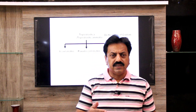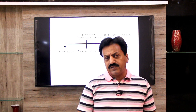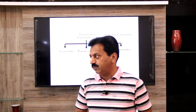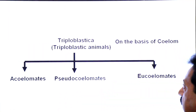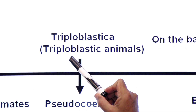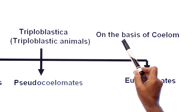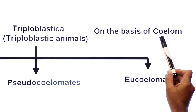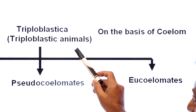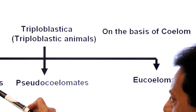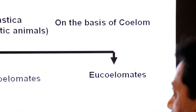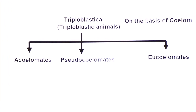Today we will start the Classification of Triploblastic Animals on the Basis of Coelom. On the basis of coelom body cavity, Triploblastica are divided into three groups: Acoelomates, Pseudocoelomates, and Eucoelomates. So first of all, let's define the coelom.